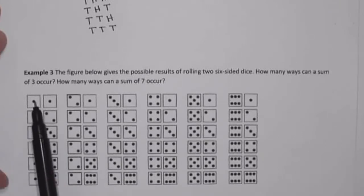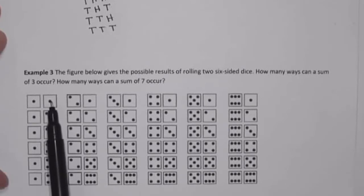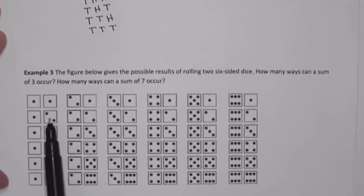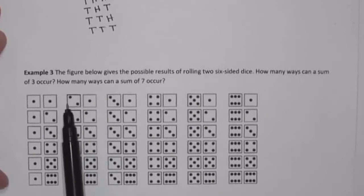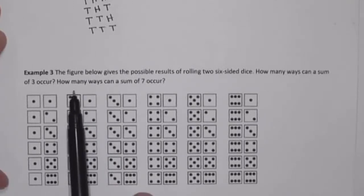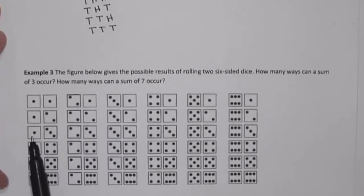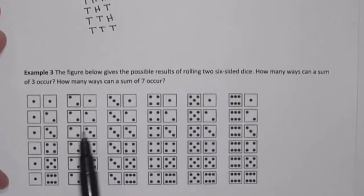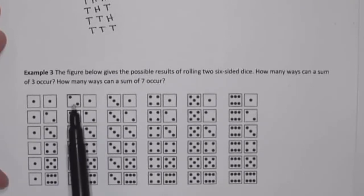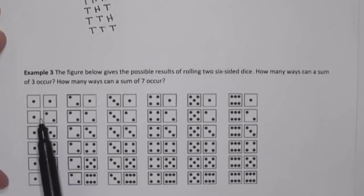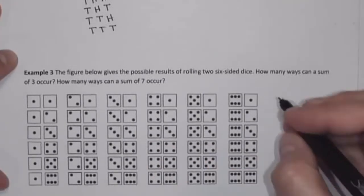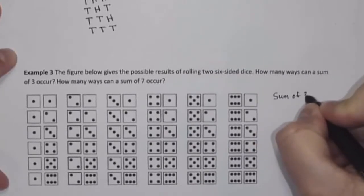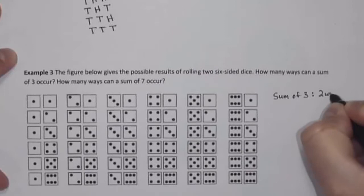If we roll a one and a one, that's a sum of two. If we roll a one and a two, that's a sum of three — so that outcome results in a sum of three. Similarly, rolling a two and a one also results in a sum of three. Continuing through the list, there are only two different ways to get a sum of three out of the 36 possible outcomes.